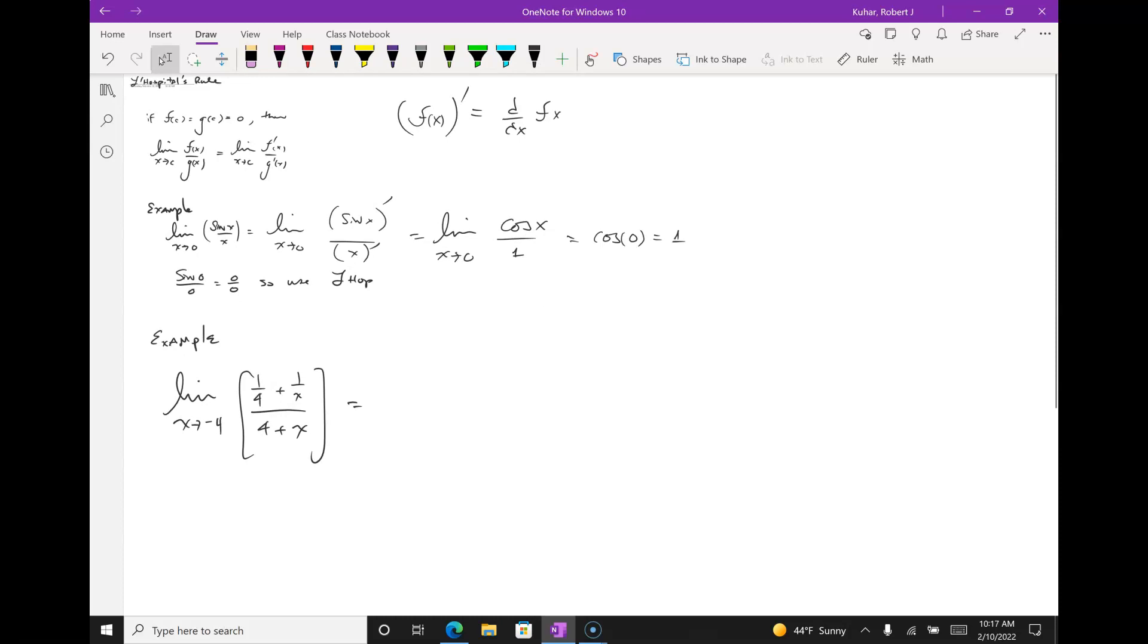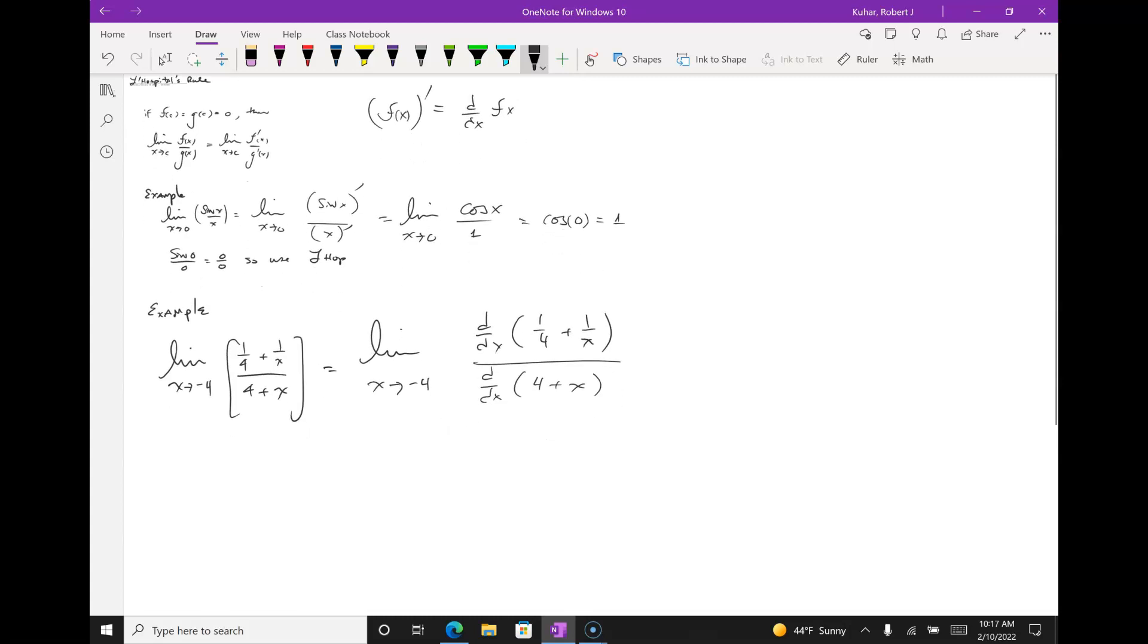So, it looks like the difficult part here is probably the numerator. Let me just write it another way so you can see it. I'm doing the limit as x goes to negative four of d/dx of one-fourth plus one over x over d/dx of four plus x. By the way, I knew already that this was zero over zero.